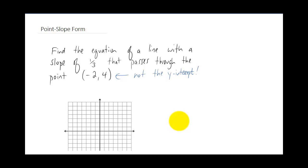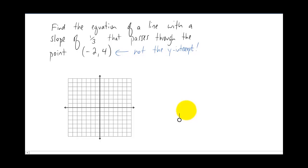In the last video we talked about slope intercept form. In this video we're going to talk about point slope form. And I'm going to start with a question. Find the equation of a line with the slope of one third that passes through the point negative two four.